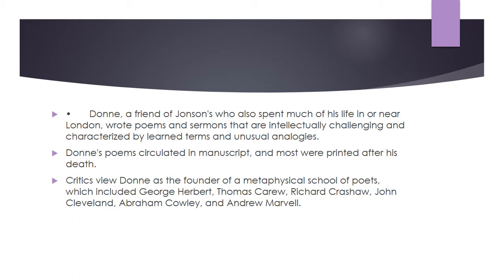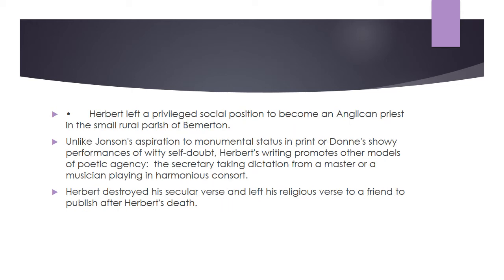Critics viewed Donne as the founder of a metaphysical school of poets, which included George Herbert, Thomas Carew, Richard Crashaw, John Cleveland, Abraham Cowley, and Andrew Marvell. Herbert left a privileged social position to become an Anglican priest in the small rural parish of Bemerton. Unlike Jonson's aspiration to monumental status in print or Donne's showy performances of witty self-doubt, Herbert's writing promotes other models of poetic agency — the secretary taking dictation from a master, or a musician playing in harmonious concert. Herbert destroyed his secular verse and left his religious verse to a friend to publish after Herbert's death.